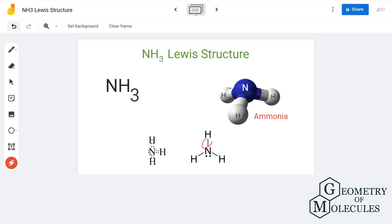Nitrogen forms three single bonds with all three hydrogen atoms. This is the Lewis structure of NH3.